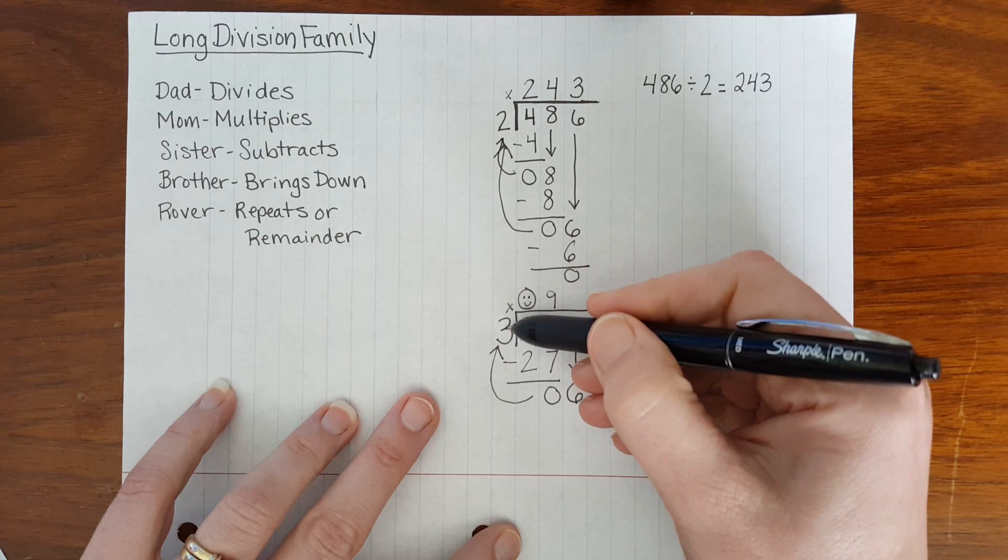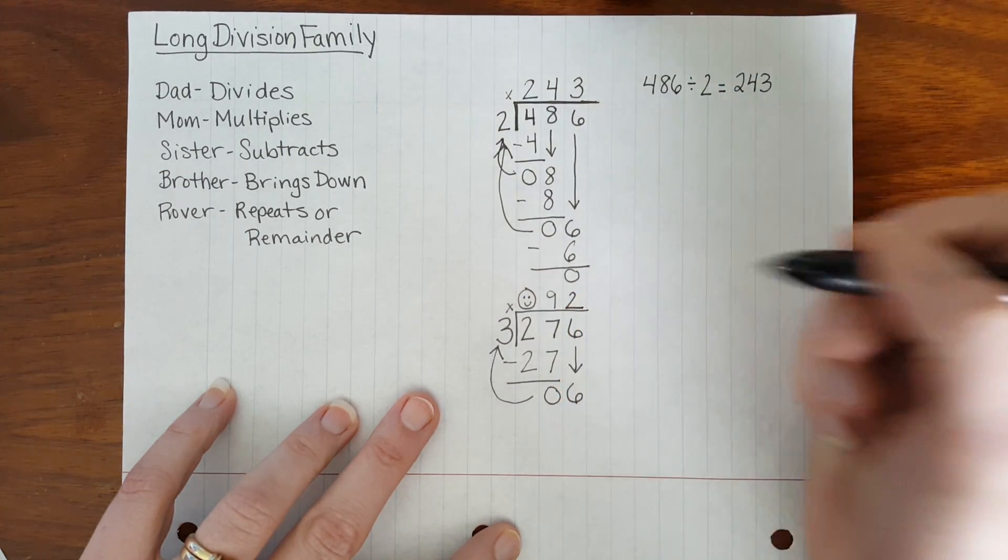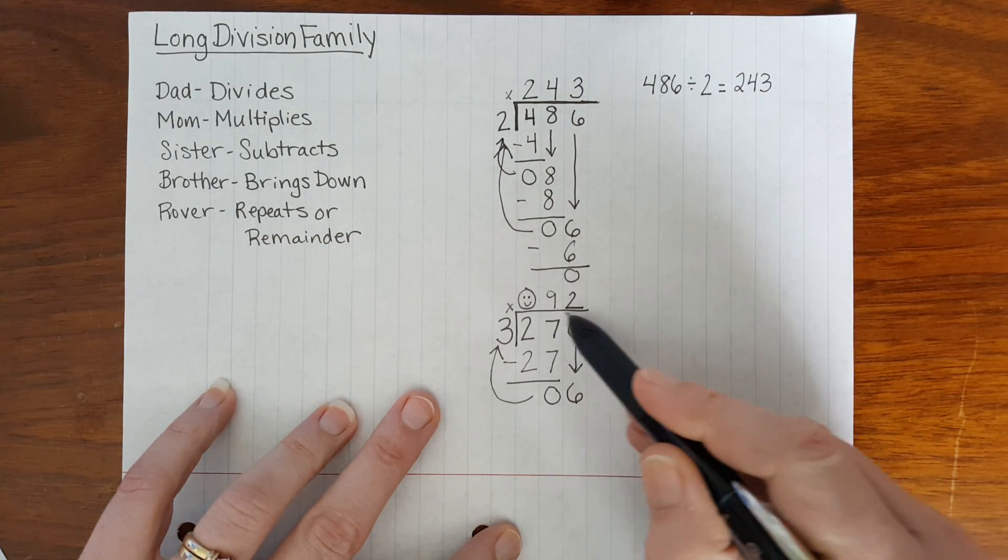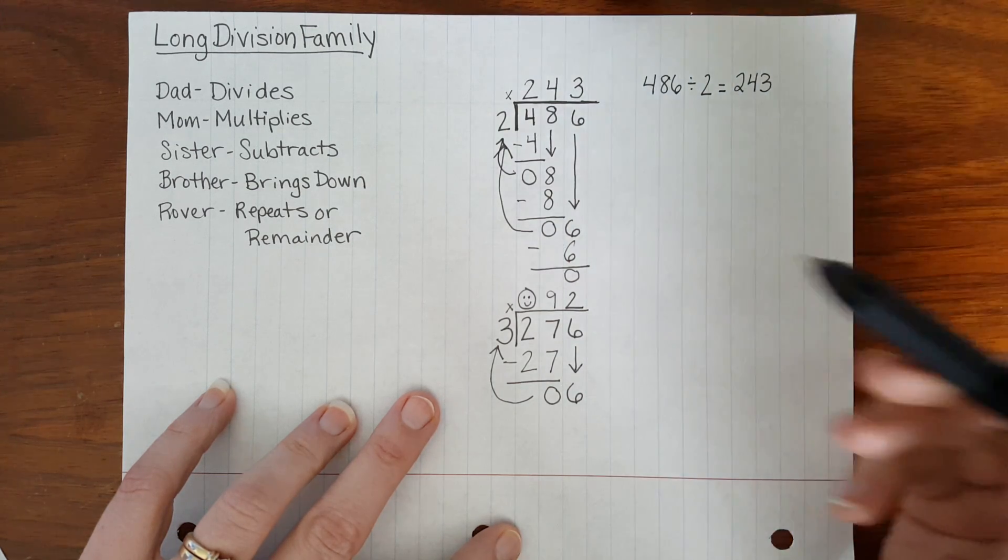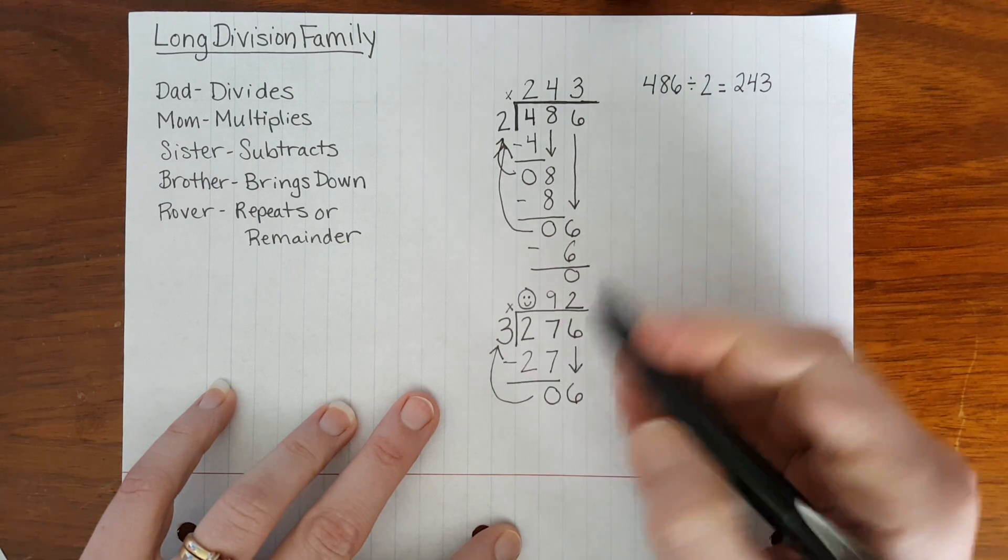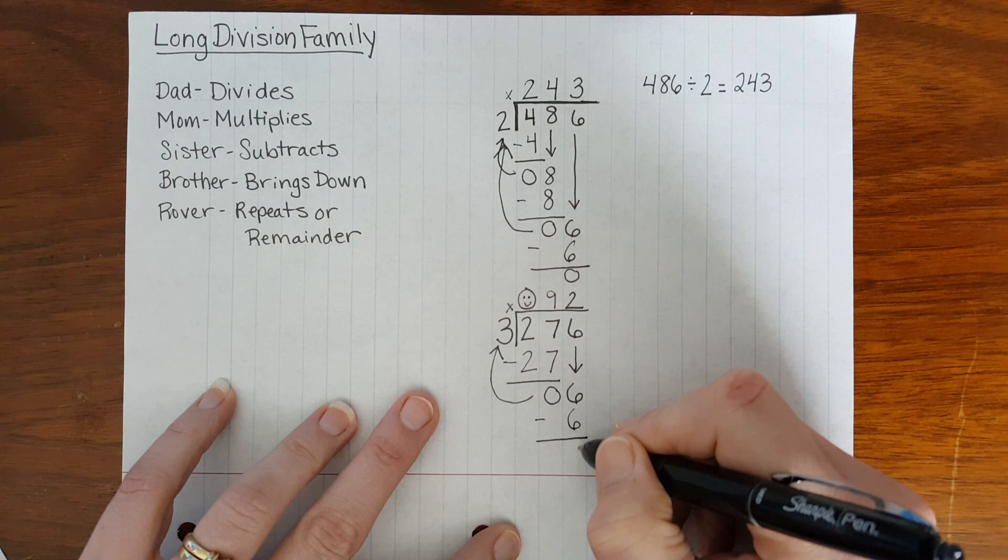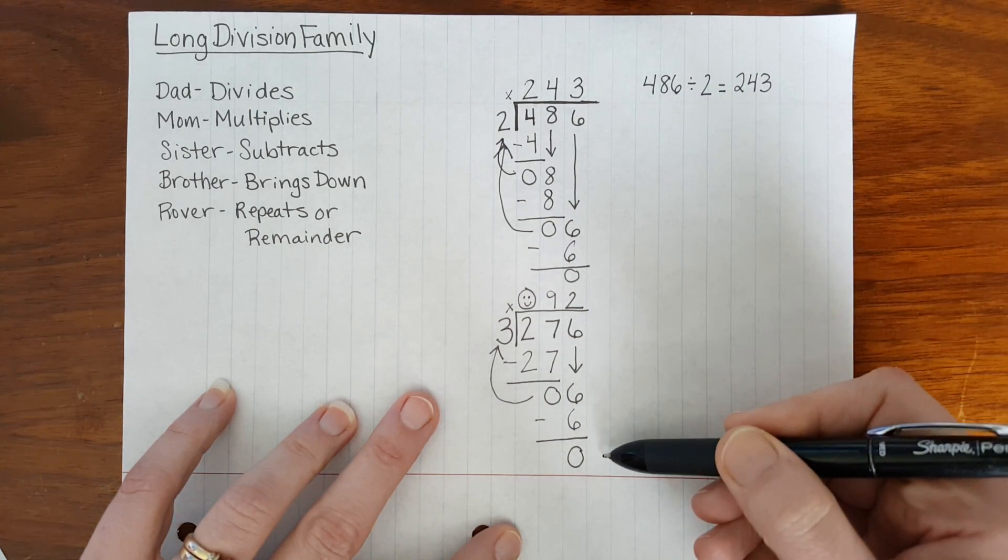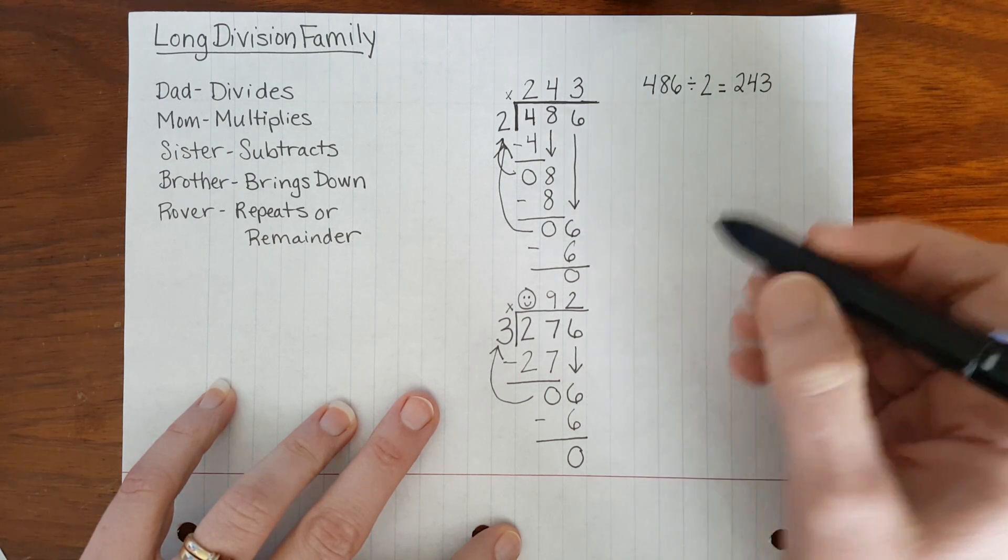Dad divides 6 divided by 3 is another basic math fact. 6 divided by 3 is 2. We are not done just because we filled in all of the missing numbers up above our dividend. Mom still has to double-check and multiply. 2 times 3 equals 6. Sister subtracts 6, take away 6 is 0. Now there is nothing for Brother to bring down, and Rover has no remainder to put as part of the quotient.